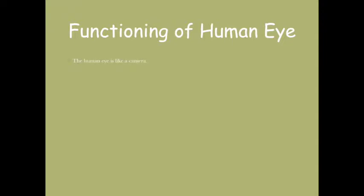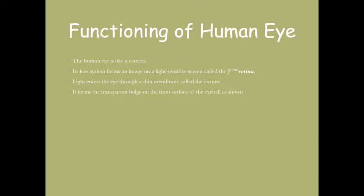The human eye is just like a camera. Its lens system forms an image on the light-sensitive screen called the retina. Light enters the eye through a thin membrane called the cornea, which forms a transparent bulge on the front surface of the eyeball. The eyeball is approximately spherical in shape.